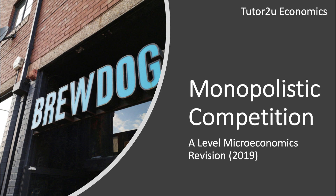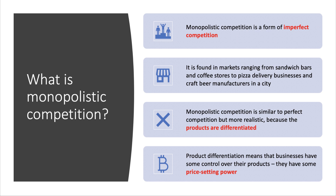Welcome to a short and succinct revision presentation looking at the market structure known as monopolistic competition. Monopolistic competition is a form of imperfect competition and it's quite a realistic market structure — we find it in loads of examples. In any given busy town or city there'll be plenty of sandwich bars, coffee shops, and independent businesses. One particular favorite is the craft beer sector, where you have a huge amount of choice with lots of local operators competing for custom. Monopolistic competition is similar to perfect competition but more realistic because the products are differentiated, as opposed to standardized and homogeneous as we assume in perfect competition.